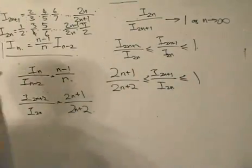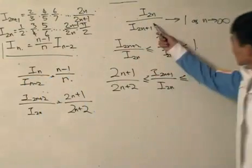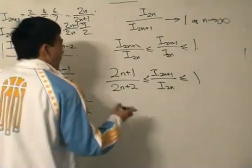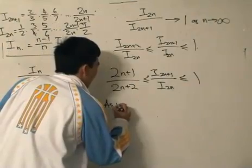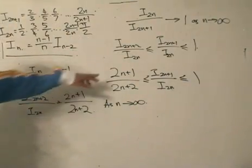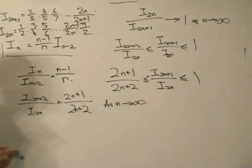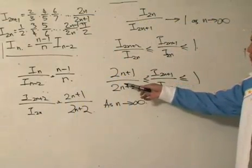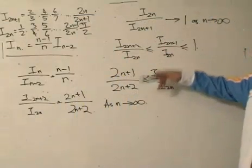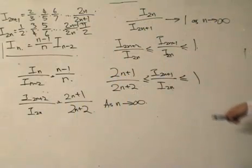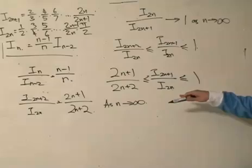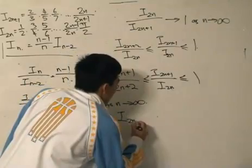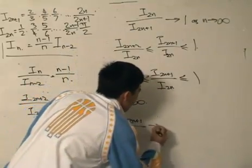Now the last step is to show this tends towards 1 as n tends towards infinity. This is the inequality that I have, and as n tends towards infinity, can't you see that this equation will tend towards 1 because infinity divided by infinity, or a huge number divided by an equally huge number, equals 1. I got 1 over here, so this thing would be smacked right in the center, and that is 1.